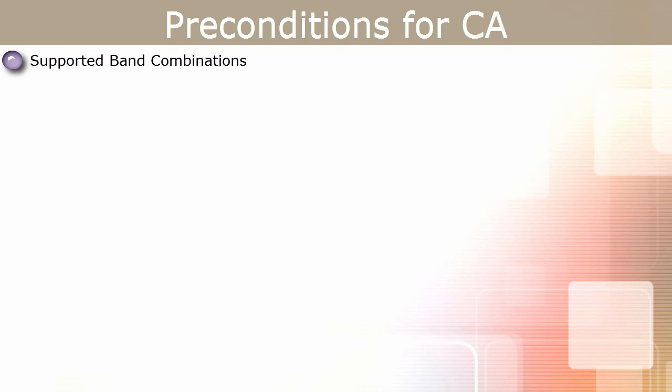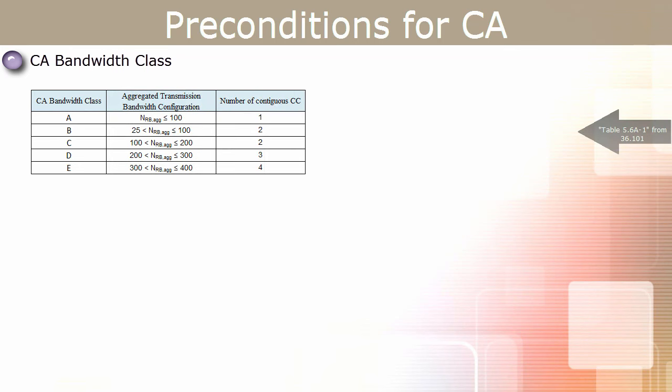Third, Supported Band Combinations: 3GPP has defined all the allowed band combinations for CA, and the UE sends whatever band combinations it supports to the eNodeB. Fourth, CA Bandwidth Class: the CA bandwidth class tells the UE's carrier aggregation capability for a particular band. For example, if the UE supports bandwidth class A for a band, it can have only 1 contiguous carrier from that band with a maximum of 100 resource blocks. If the UE supports bandwidth class B, it can have 2 contiguous carriers but a combined maximum of only 100 resource blocks.